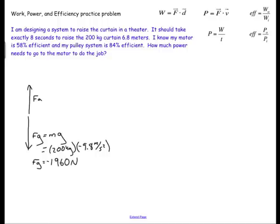I'll put a negative sign on that since it's pointing down. We're going to assume that this is pulling at a constant rate so I don't have to worry about any accelerations. F net will be zero and so the applied force on my pulley system is going to be same magnitude but opposite direction, 1,960 newtons.